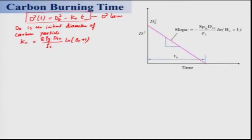When we plot d² versus time, we see that d² starts at d₀² (the initial droplet diameter squared) and reduces linearly. The slope from this d² law relationship comes out as 8·ρg·D₁₂ / (ρc · ln(Bc + 1)). When the droplet diameter becomes zero, the time duration for complete combustion of the carbon sphere is known as Tv.